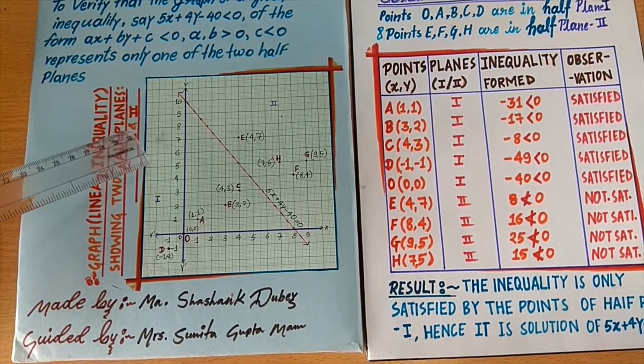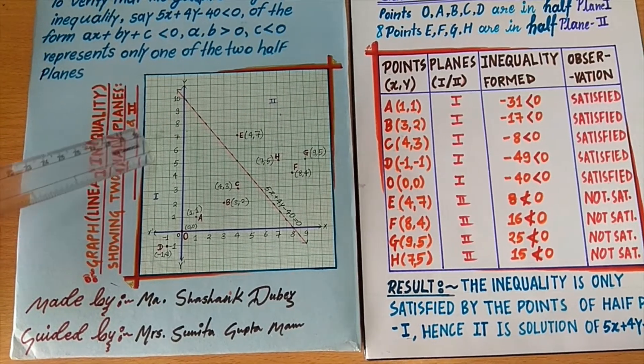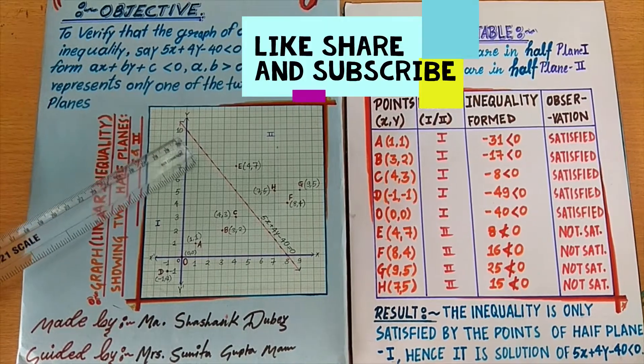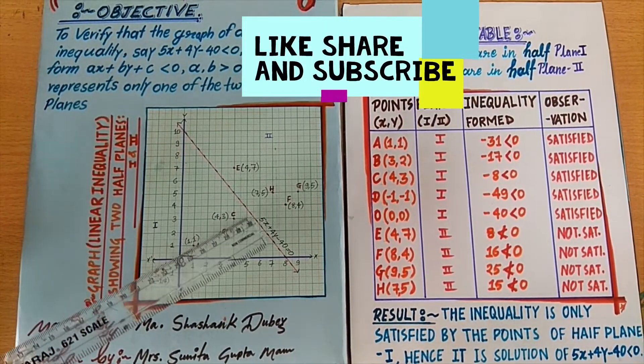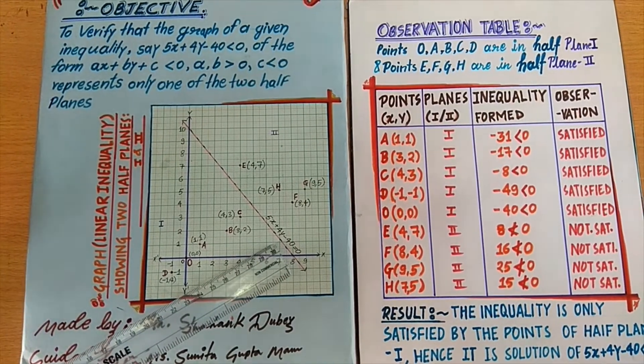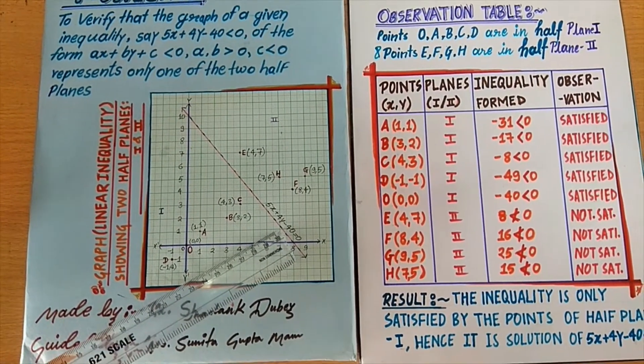Hence, the solution for this inequality is plane first. And also, the points lying on the line 5x plus 4y minus 40 equals 0 do not satisfy the given inequality.